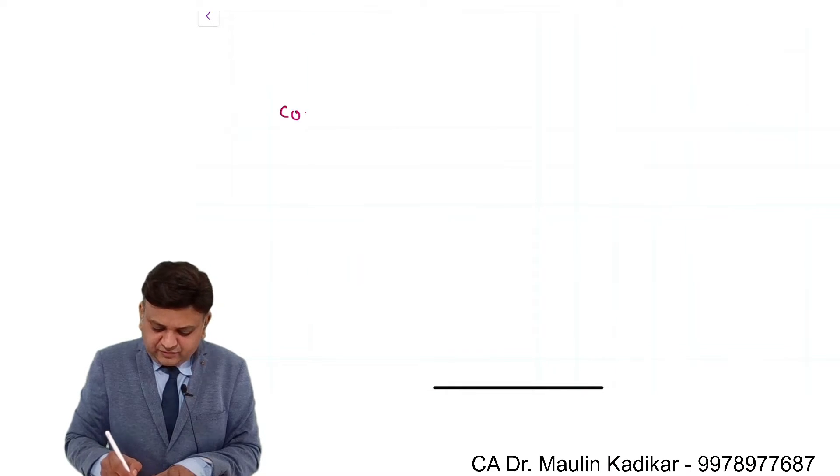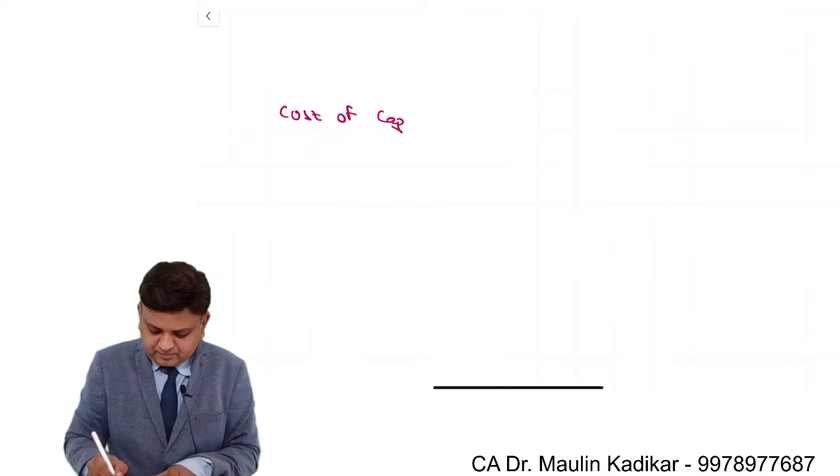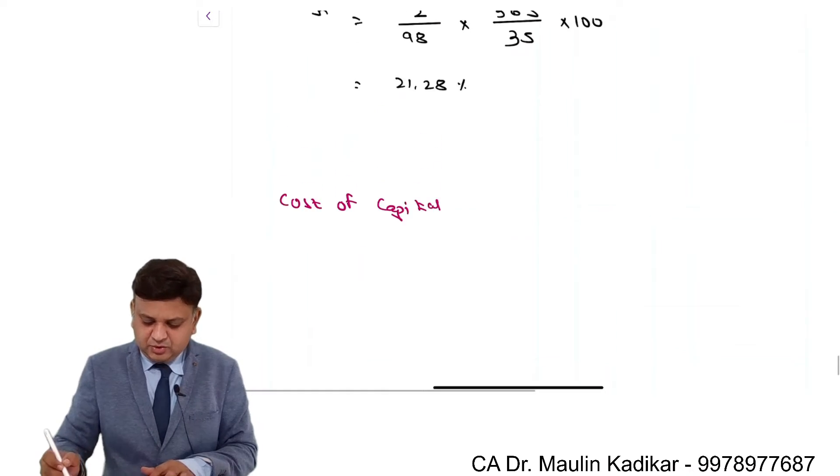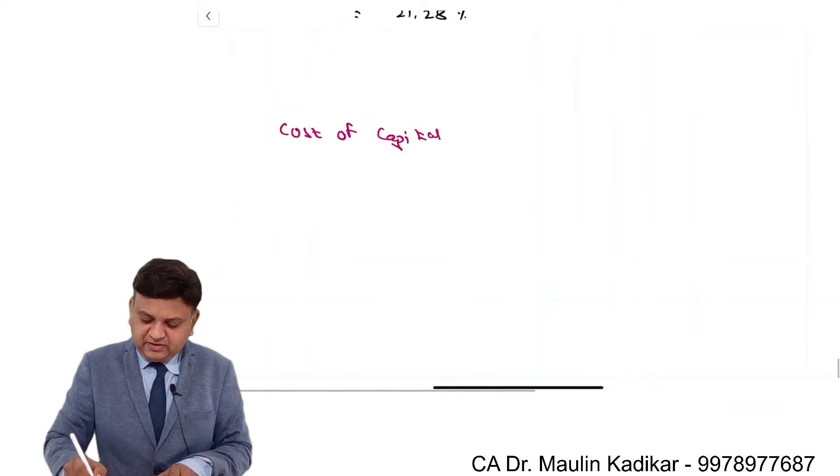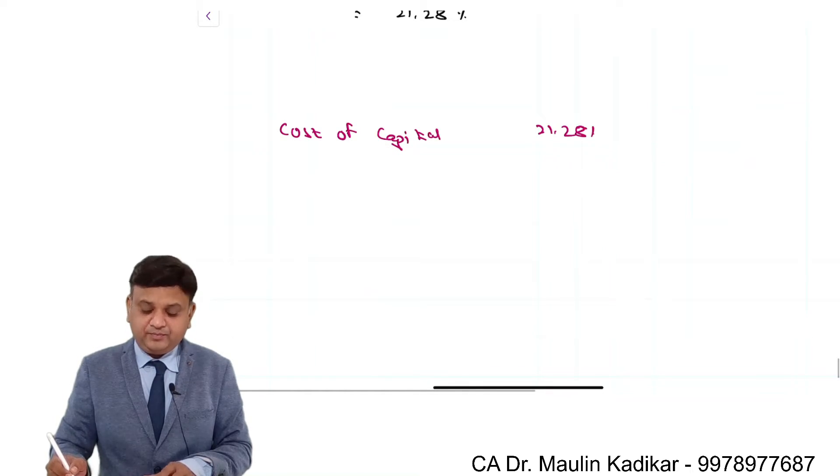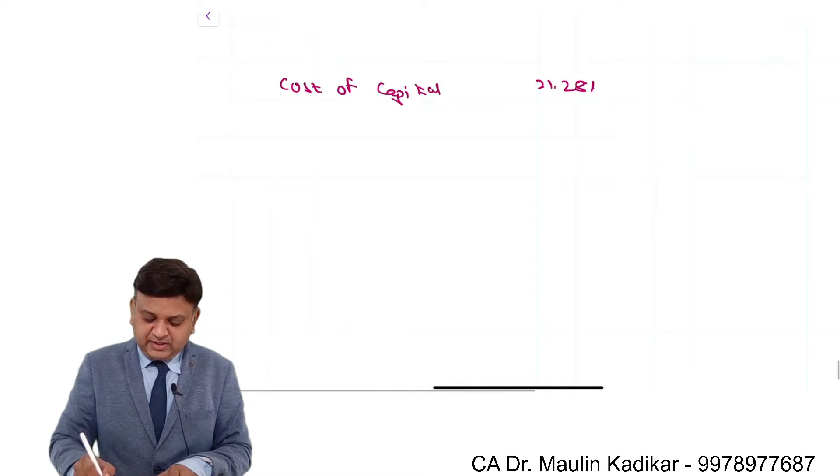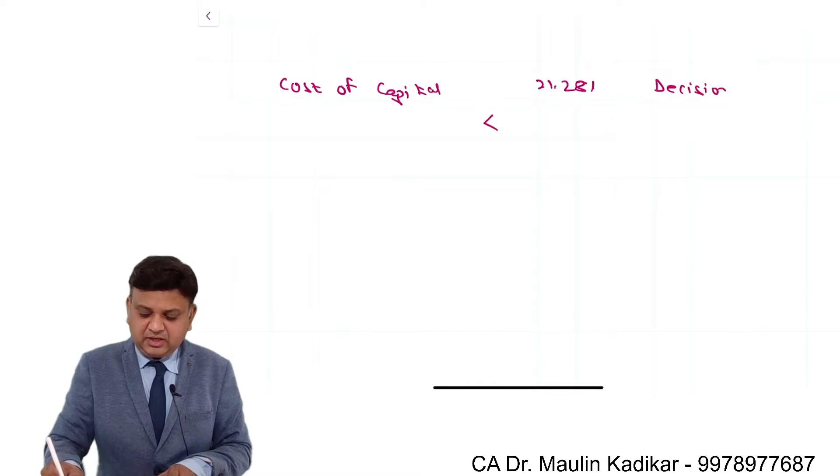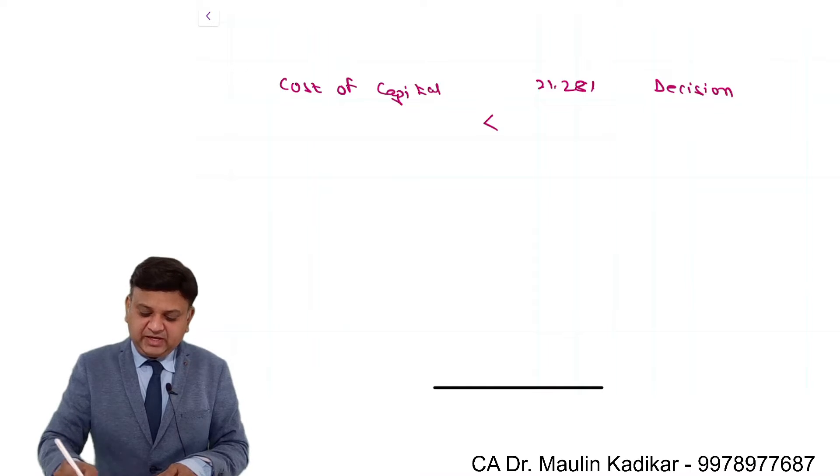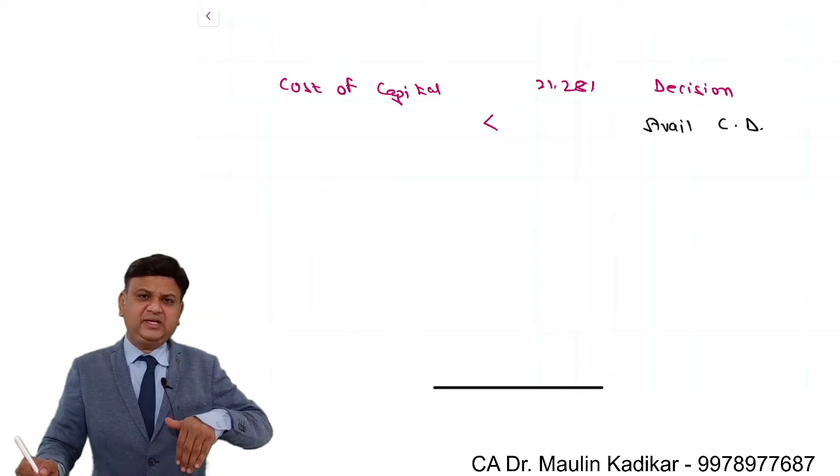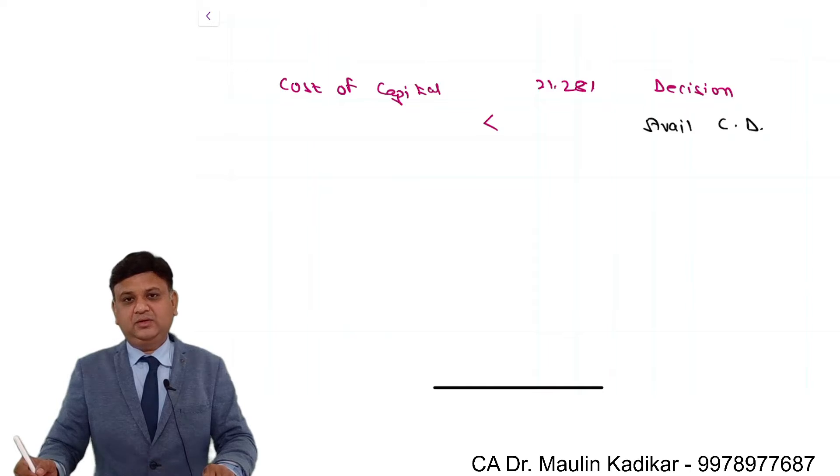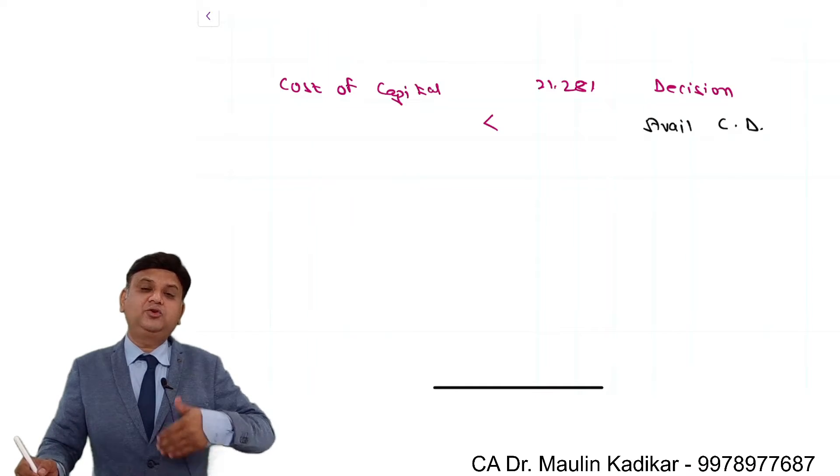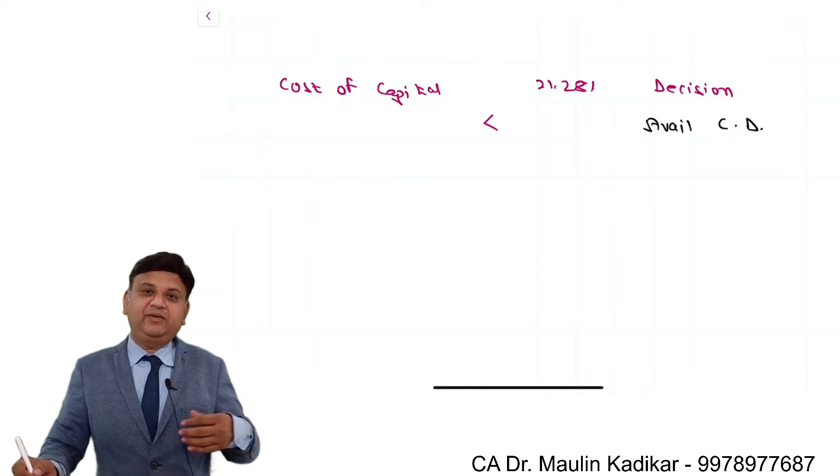So we can give the suggestion like this, that cost of capital of the company should be compared with 21.28 percentage. If at all the cost of capital is less than 21.28 percentage, then what is our decision? Our decision is avail cash discount. Why? Because you can earn at a lower rate than the advantage of the cash discount, or we understand that you have to borrow at a lower rate than the advantage of the cash discount.